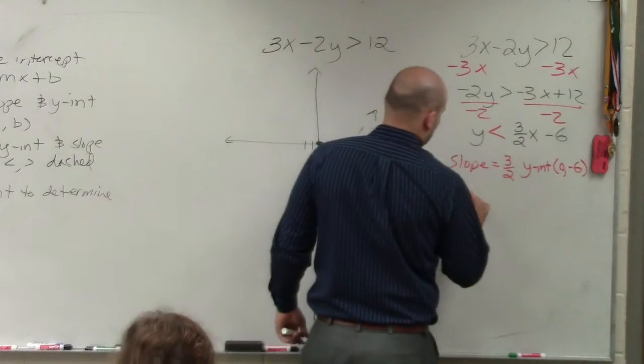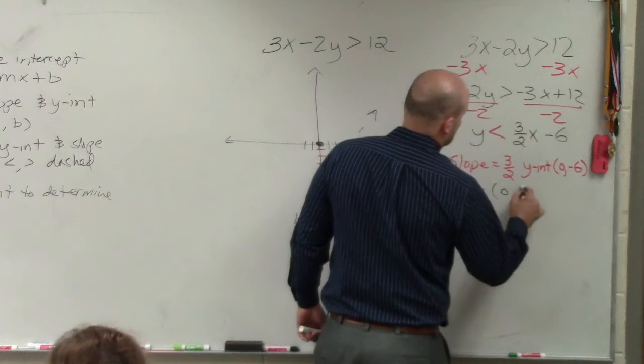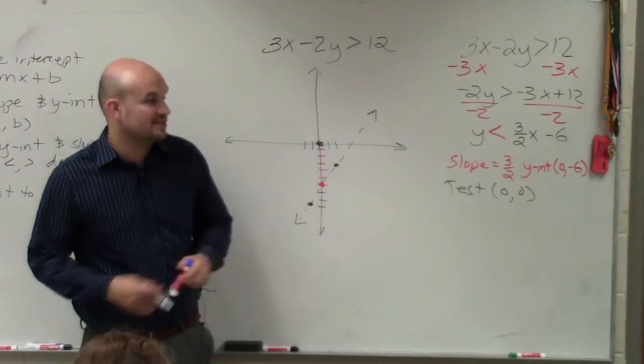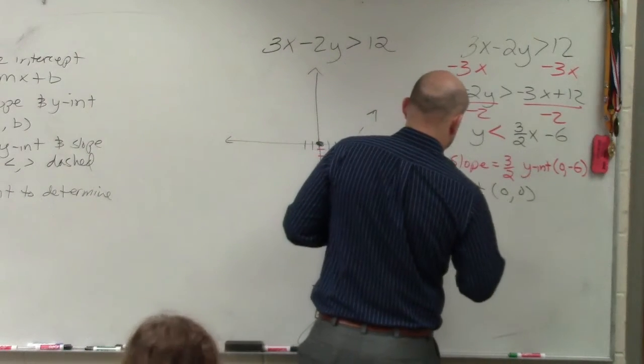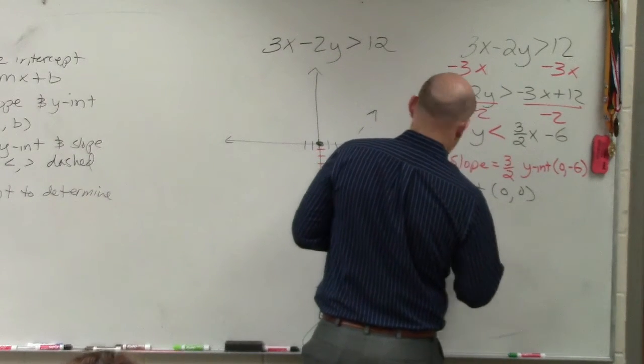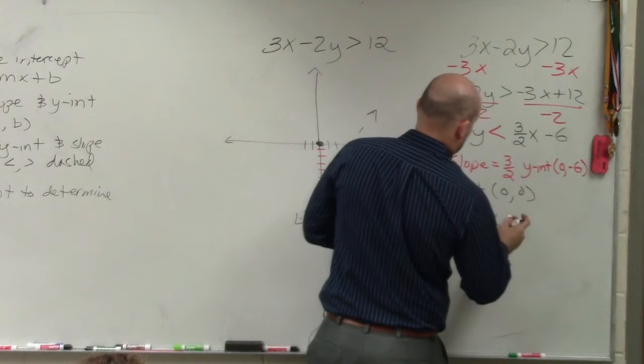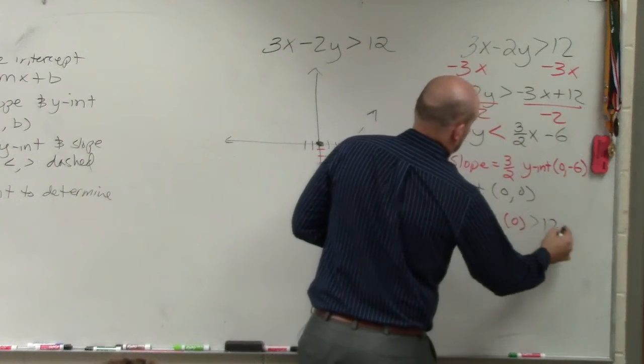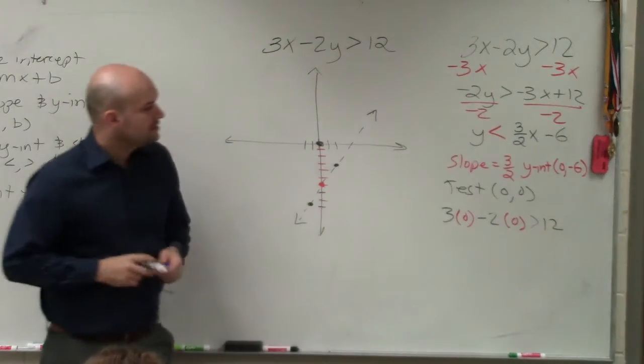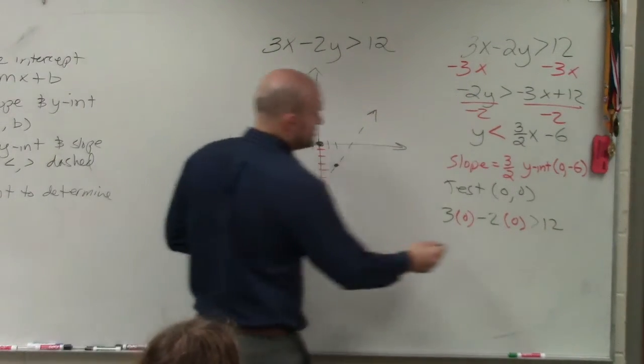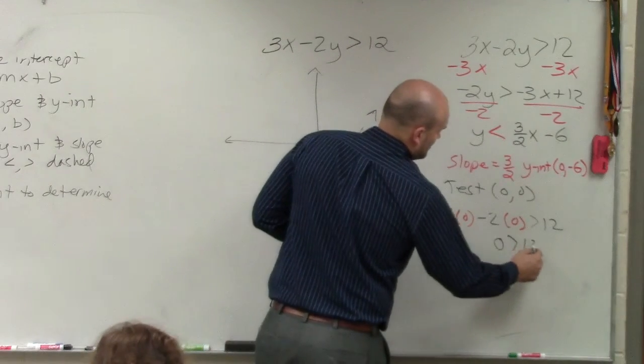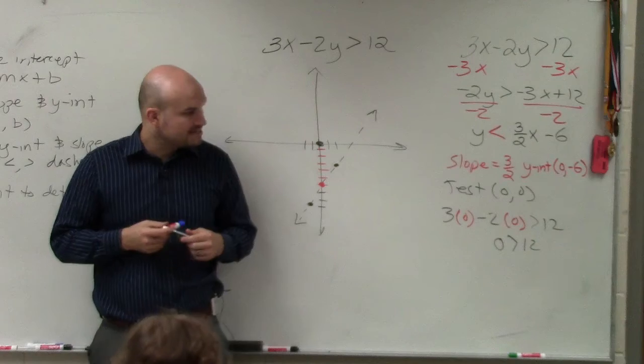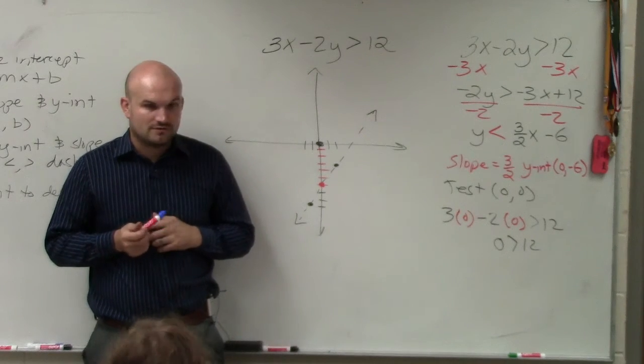So to test your point, all you do is write test 0, 0. And that's the coordinate point. And you're just going to plug in 0 for x and 0 for y. So 3 times 0 minus 2 times 0 is just going to be 0 is greater than 12. So ladies and gentlemen, is 0 greater than 12? No.